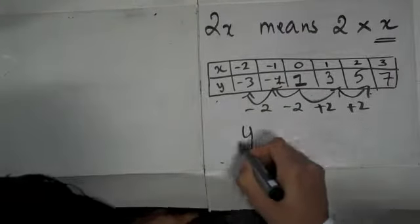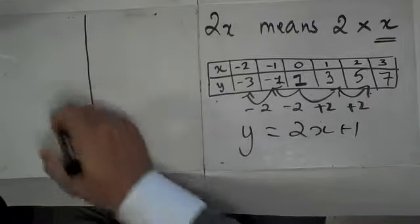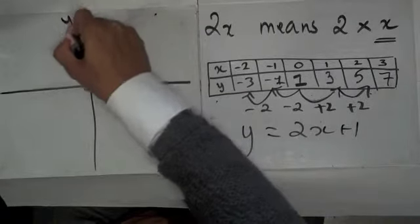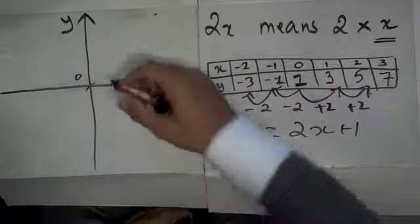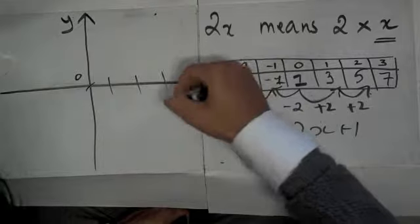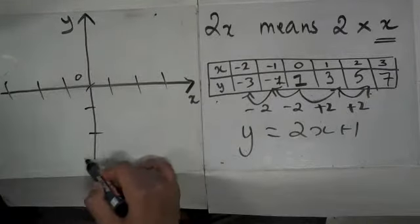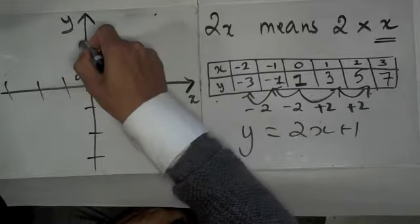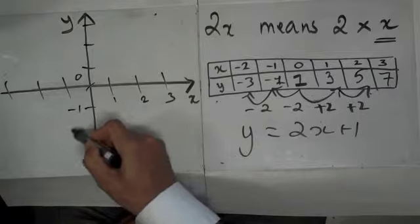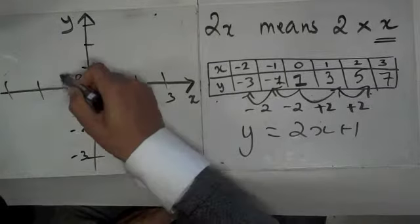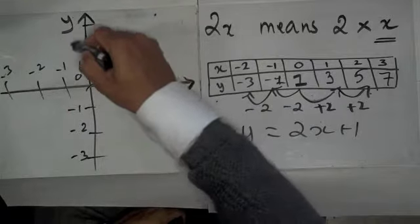So my equation is y = 2x + 1. I'm going to set up an axis. I've got x and y here, 0. And we're going to just put some numbers for x: 1, 2, 3, -1, -2, -1, -2, -3, 1, 2, 3.